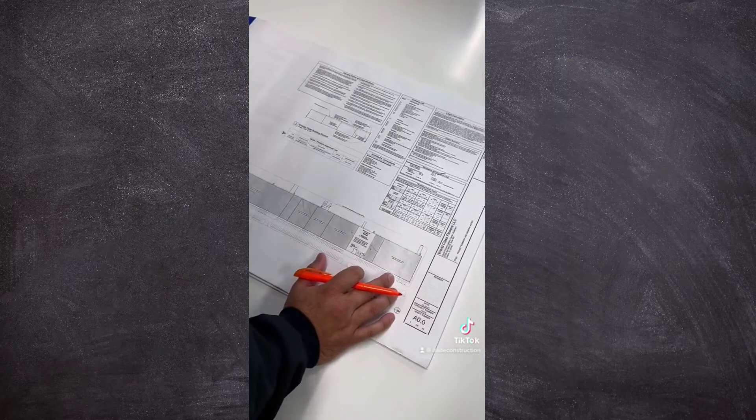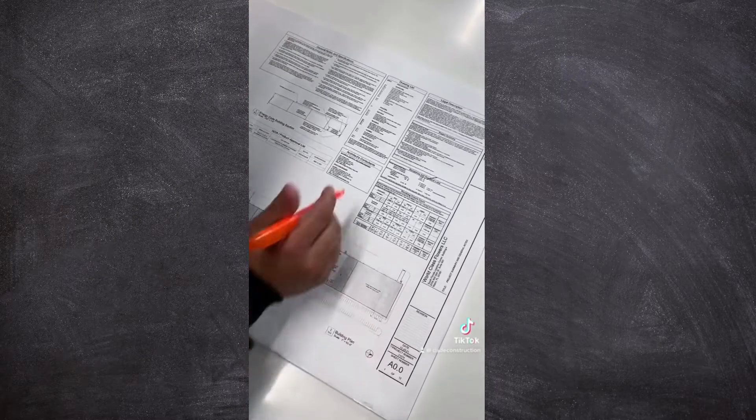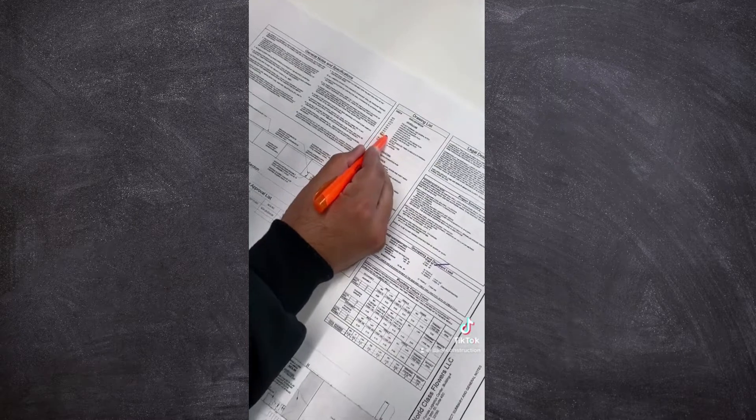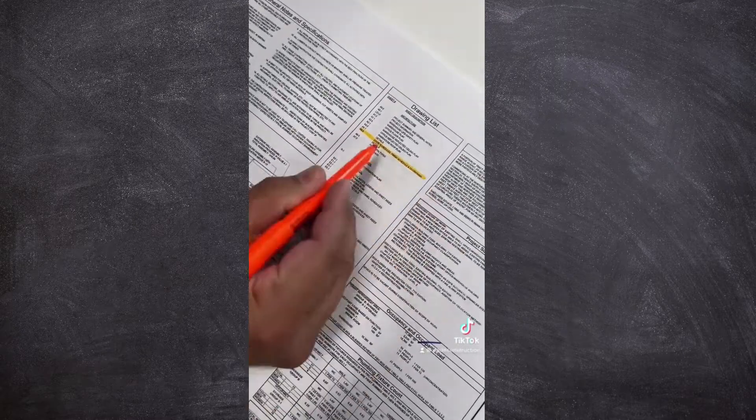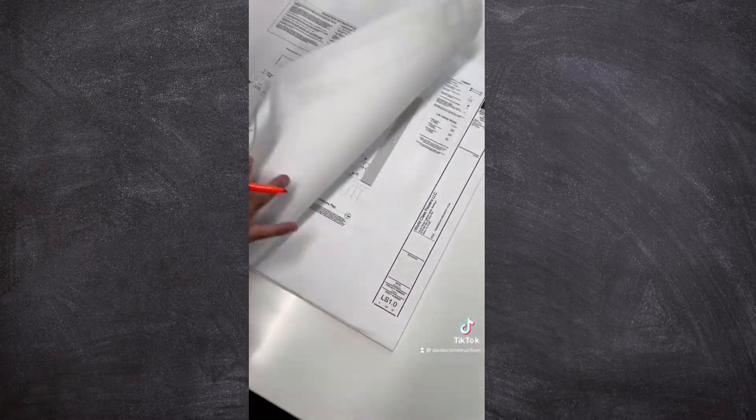Okay, so the first thing we're going to do is look at the drawing list and we're going to look for doors. So here on sheet A 5.0, you see it talks about the door schedule, finish schedule, and door finishes. So we're going to go to sheet A 5.0.